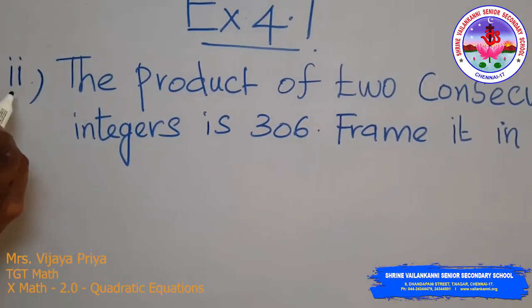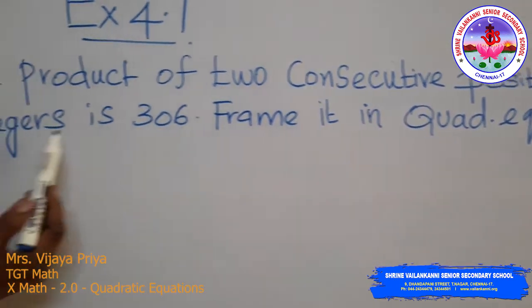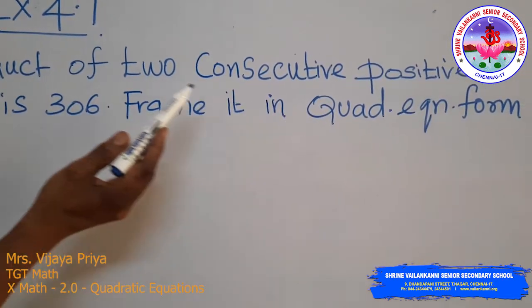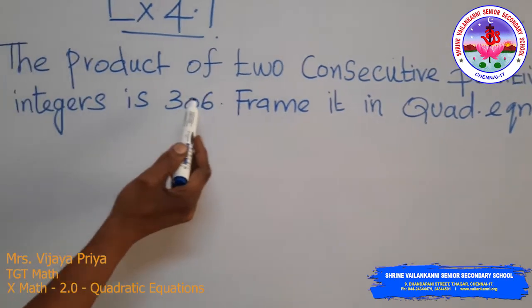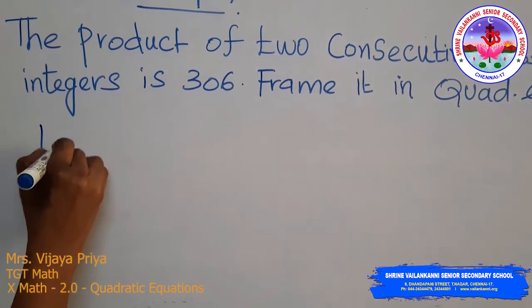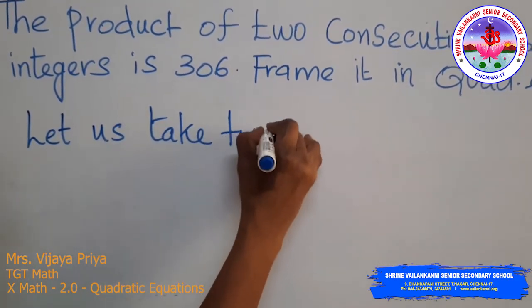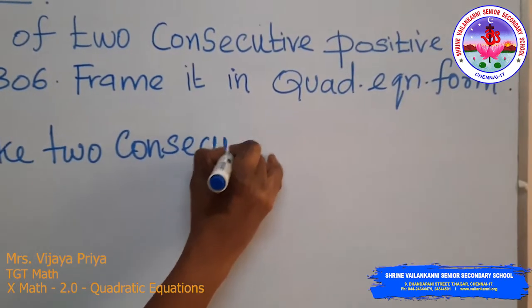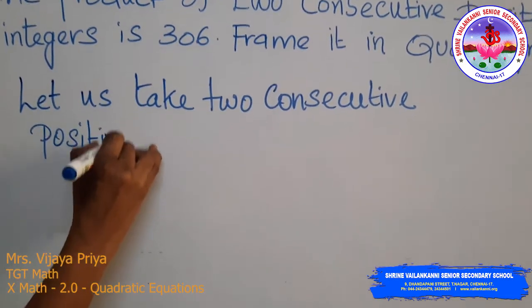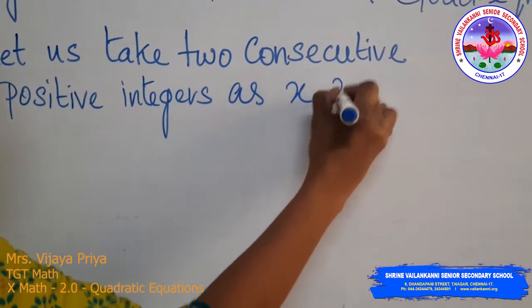Second subdivision of the second problem: the product of 2 consecutive positive integers is 306. We need to frame it as a quadratic equation. Let the two consecutive positive integers be x and x + 1.